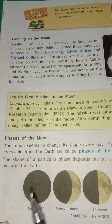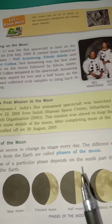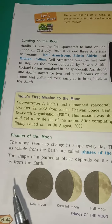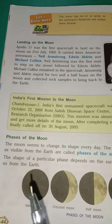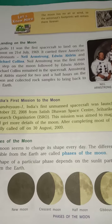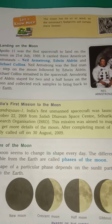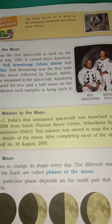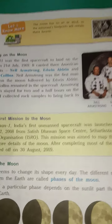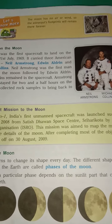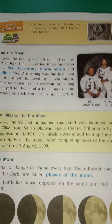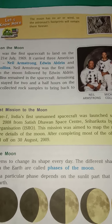The shape of a particular phase depends on the sunlit part that can be visible to us from the Earth. The sunlit part is that part of the Moon which reflects sunlight and can be seen from the Earth.